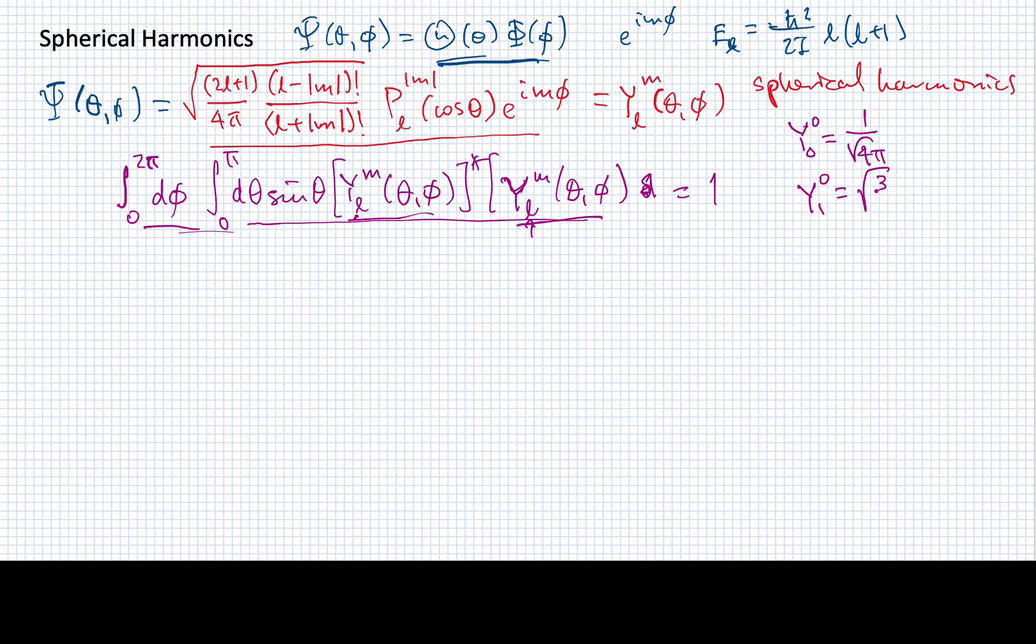Then I'll have square root of 3 over 4 pi cosine theta as the spherical harmonic. For plus or minus 1, it turns out it's the same value except for the e to the i M phi part. And this would be equal to 3 over 8 pi sine theta. And then the complex part would be plus or minus i phi. The plus or minus is from the plus or minus 1 up here.